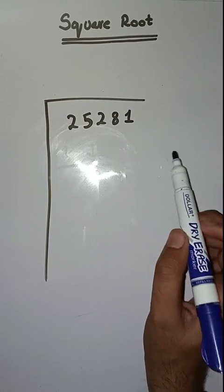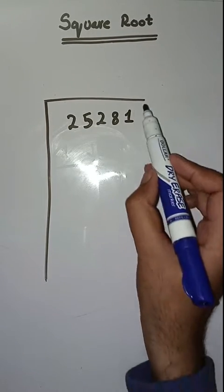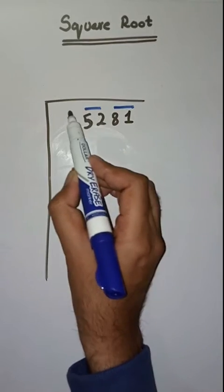So first step is we have to make pairs from right to left like this: 81, 52, and 2.